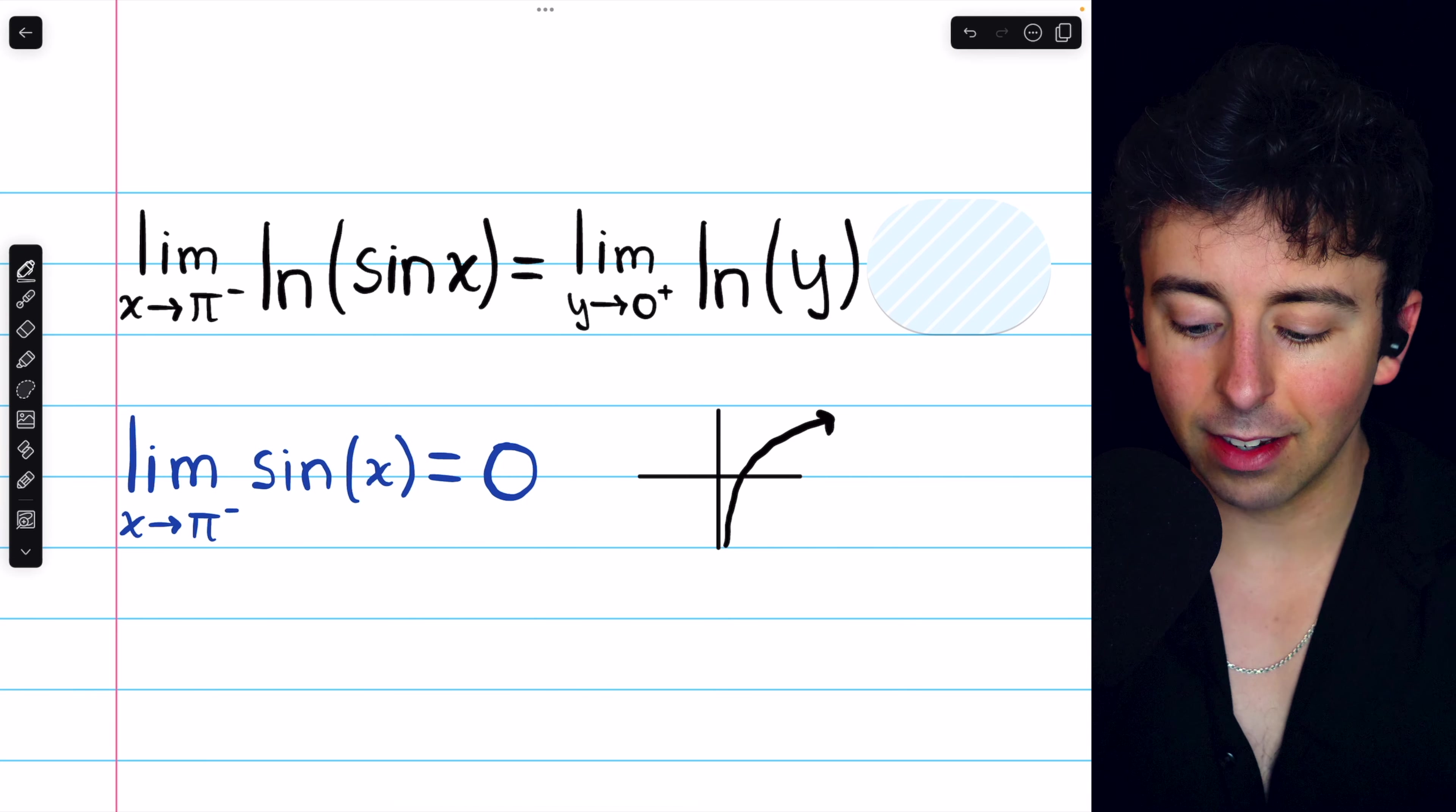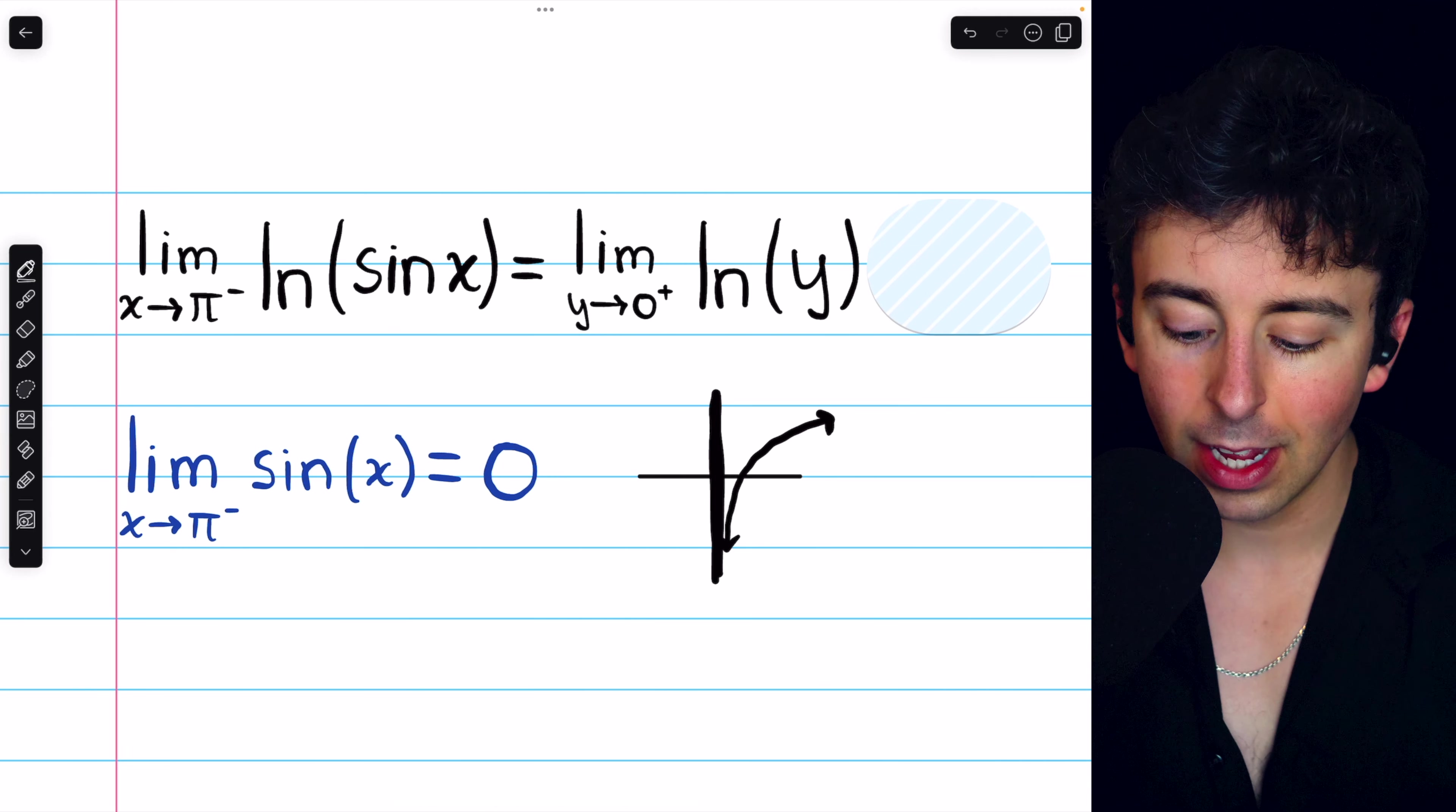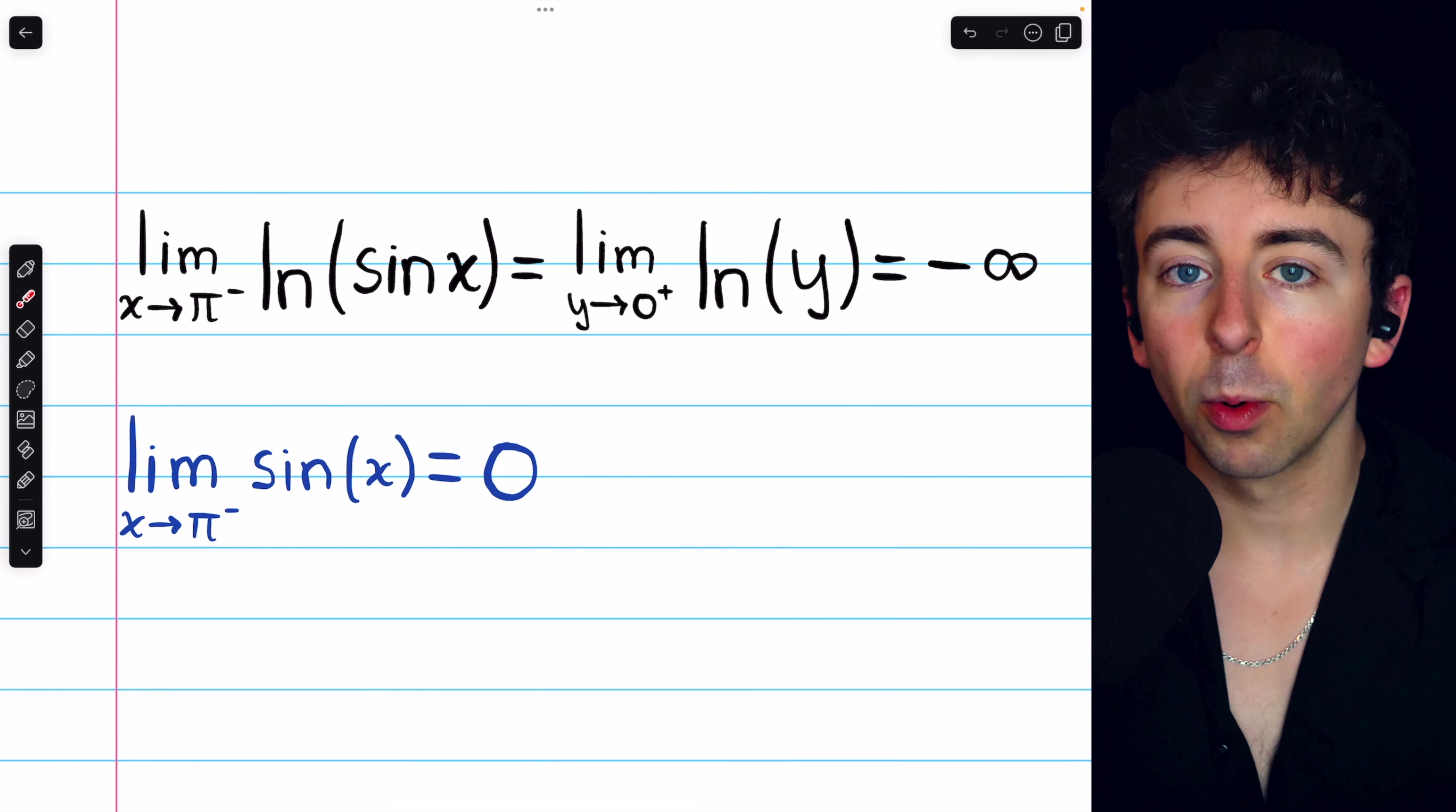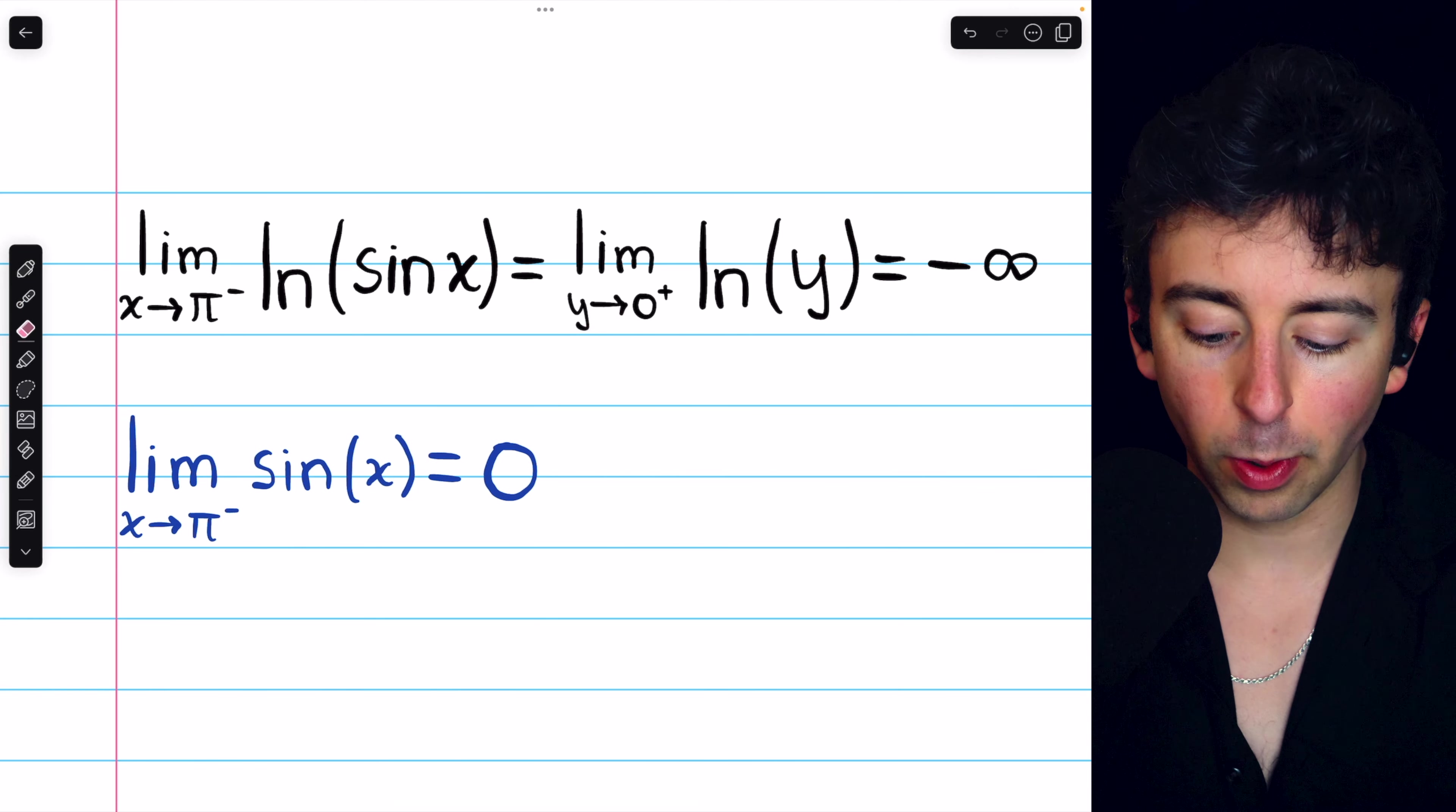And if you happen to know what the graph of the natural log function looks like, which hopefully you do, it looks like this. And so we can see from the graph that as we get close to zero, as we get close to the input being zero, the natural log is just going down to negative infinity. And so that is our limit. It doesn't exist. More specifically, it diverges to negative infinity.